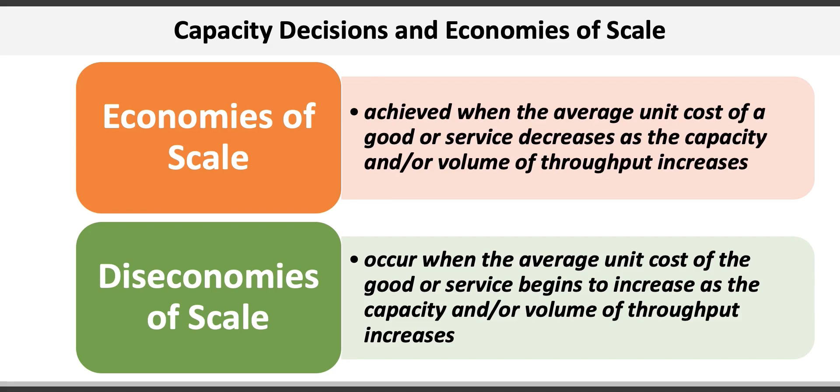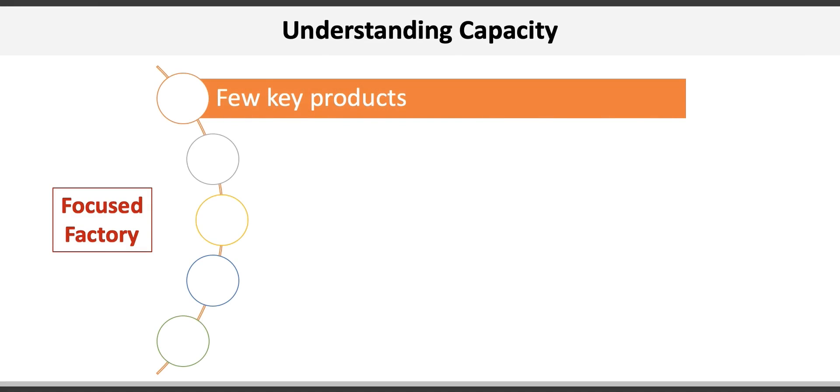Obviously, developing economies of scale is a more desirable scenario. One way to achieve economies of scale is through something called a focused factory. A focused factory takes just that, a focused approach, on production in five ways to maximize efficiency and effectiveness. First is to focus on a few key products rather than a plethora of different products. This allows for better utilization of equipment and resources.